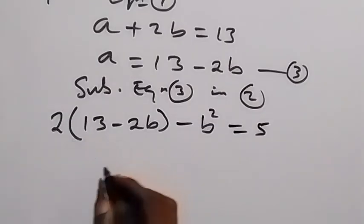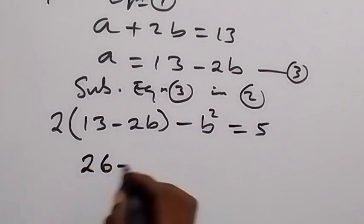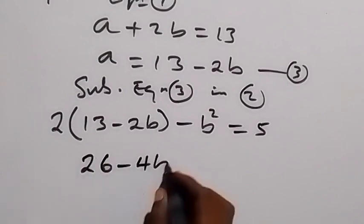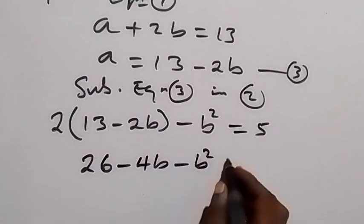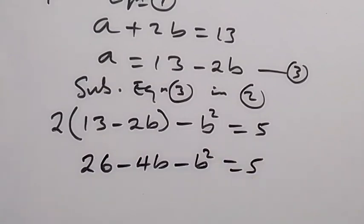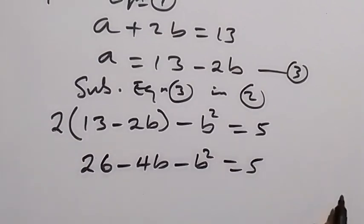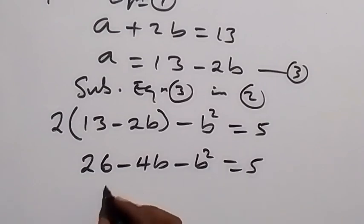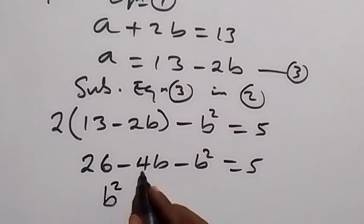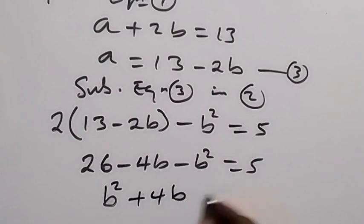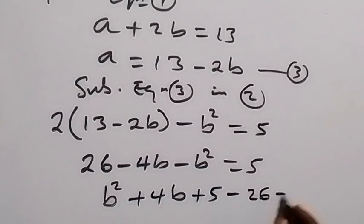Expanding the bracket, we have 26 minus 4b, then minus b squared equals 5. From here we take everything to one side to form an equation: minus b squared becomes plus b squared, minus 4b becomes plus 4b, plus 5, and take 26 to this side giving minus 26, which equals 0.